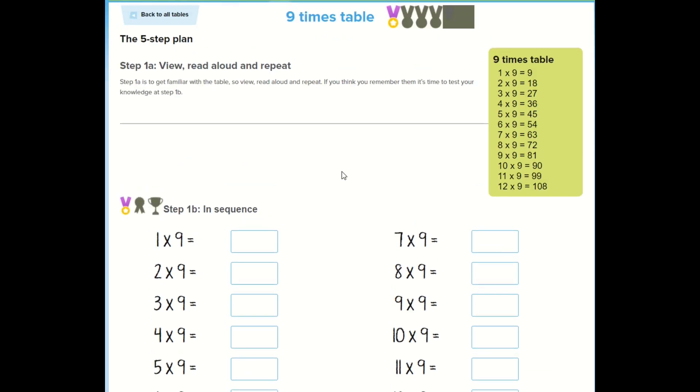One times nine is nine. Two times nine is eighteen. Three times nine is twenty-seven. Four times nine is thirty-six. Five times nine is forty-five. Six times nine is fifty-four. Seven times nine is sixty-three. Eight times nine is seventy-two. Nine times nine is eighty-one. Ten times nine is ninety. Eleven times nine is ninety-nine. Twelve times nine is a hundred and eight.